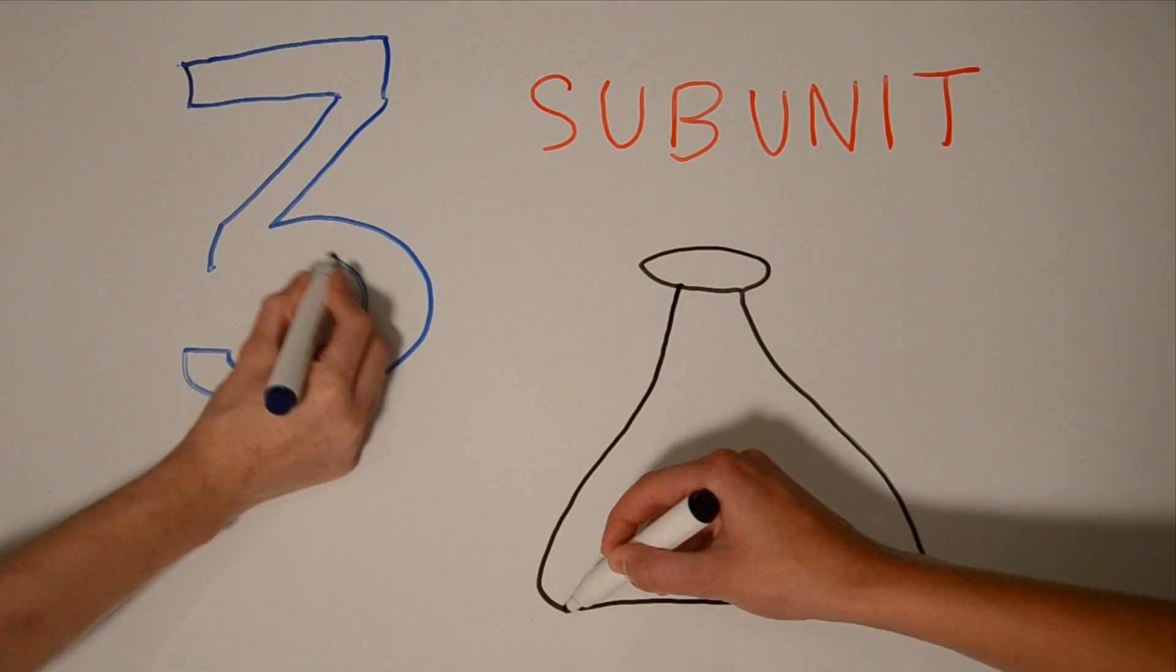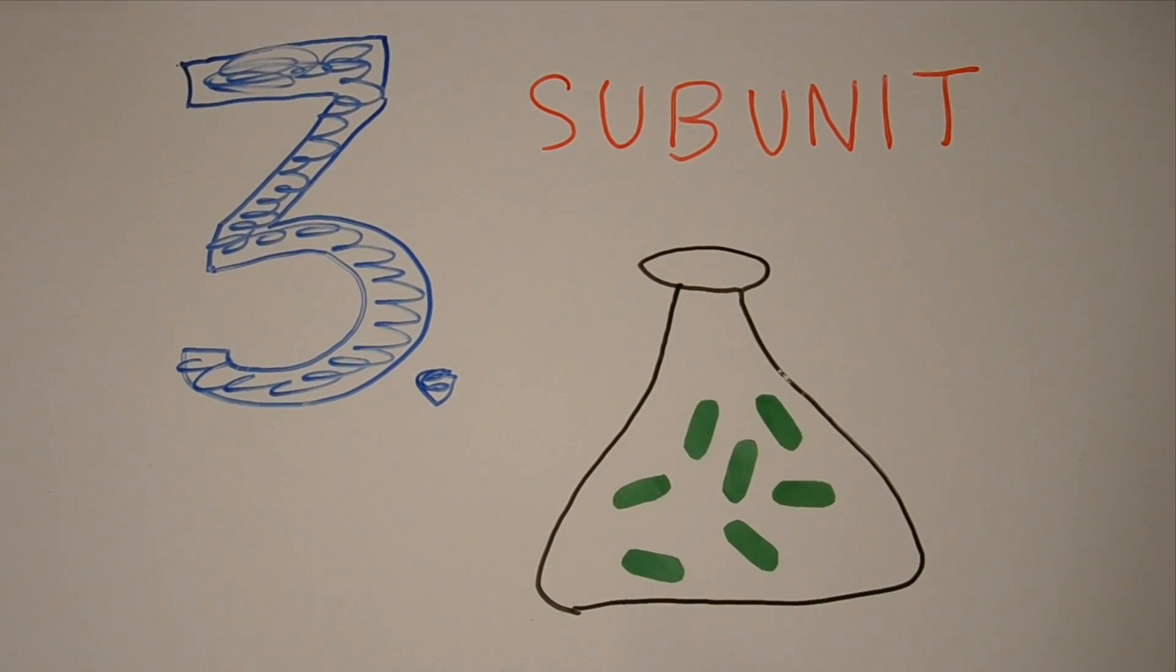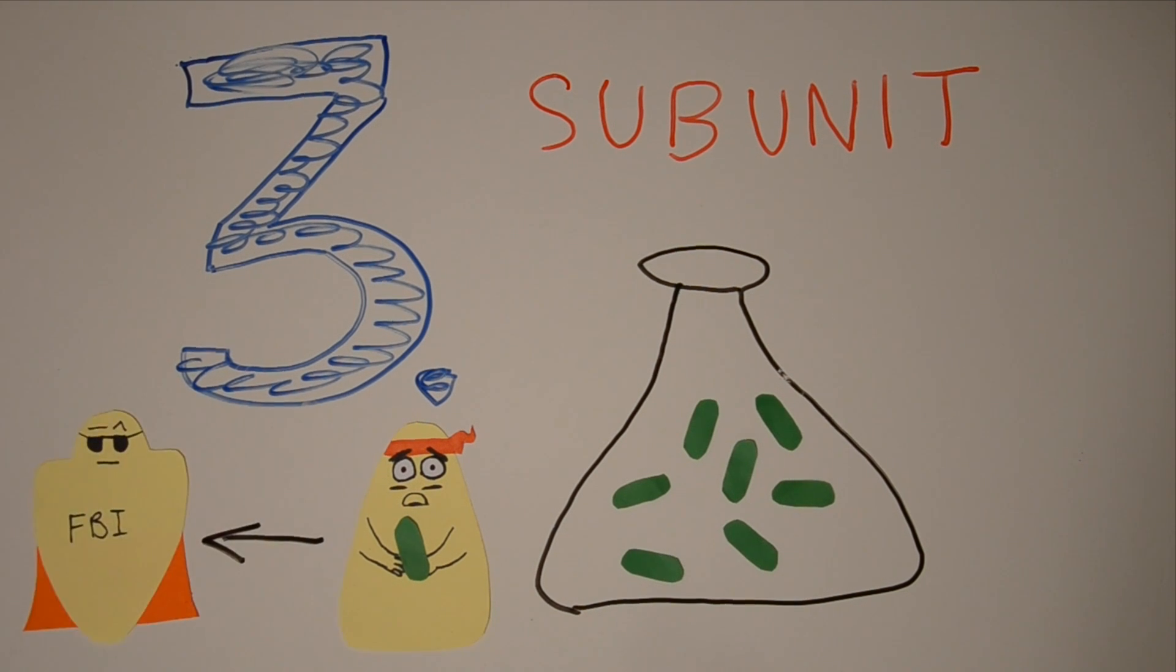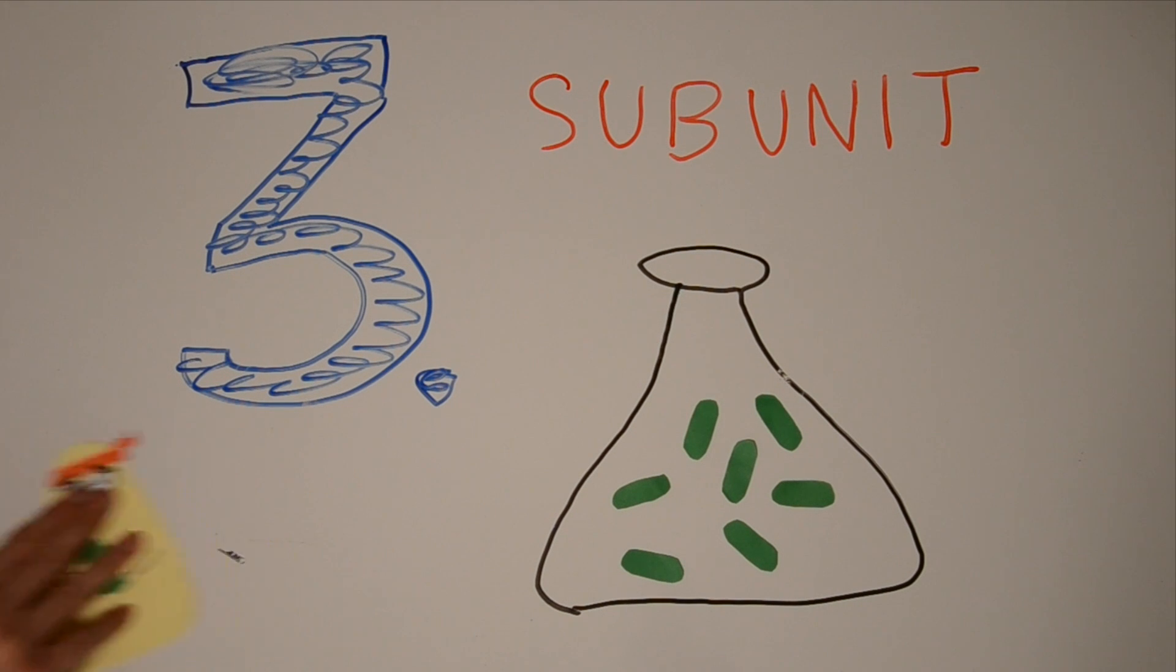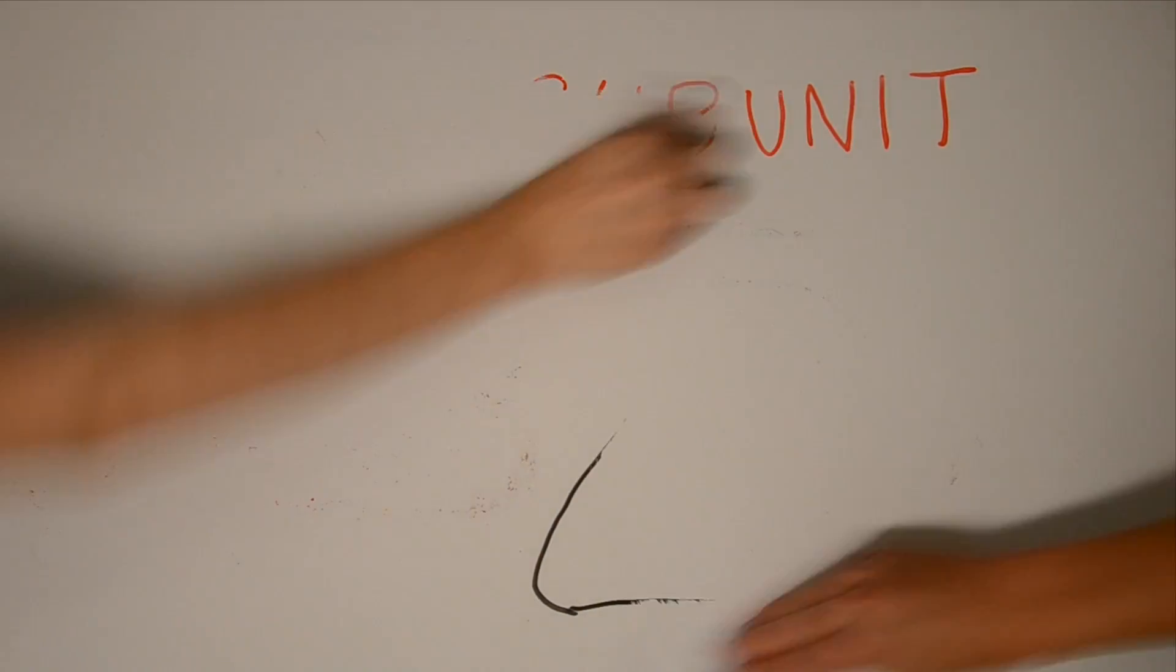The third kind are subunit vaccines containing parts of pathogens, the antigens. Remember, these were the parts of the pathogen that a reporter cell brought to the specific immune system. Subunit vaccines are like inactive vaccines safer and trigger a less well immune response. An example of a subunit vaccine is the hepatitis B vaccine.